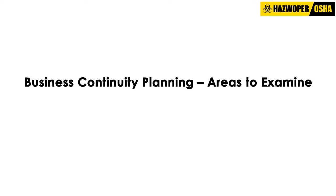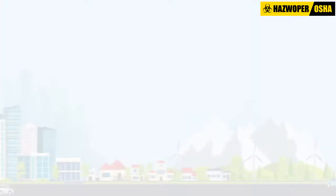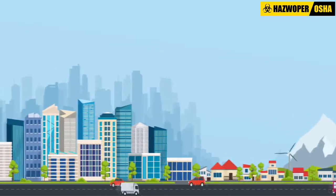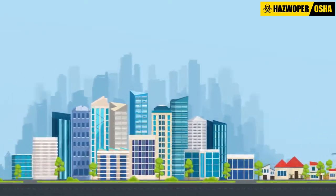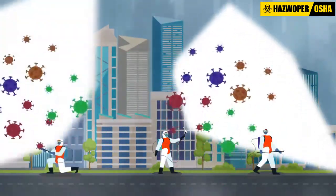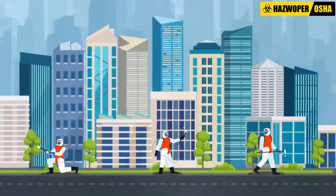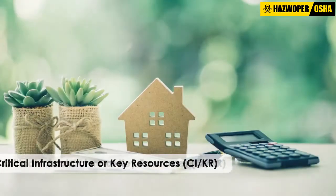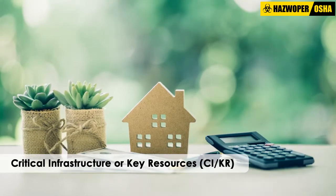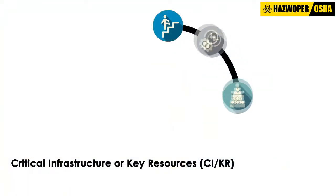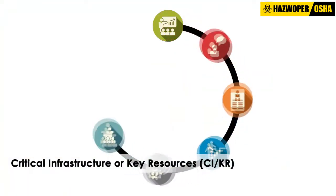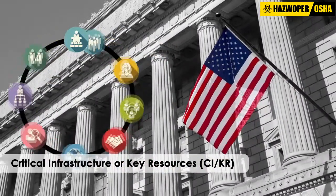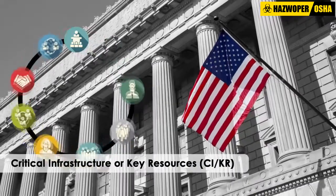Business Continuity Planning: Areas to Examine. To plan effectively for a pandemic, businesses must work closely with community planners and local public health departments to establish flexible contingency plans before a pandemic occurs. For businesses that are part of the nation's critical infrastructure or key resources, coordinating with community planners integrates the businesses' continuity plans with local and state planning strategies, ensuring timely access to resources and up-to-date information.